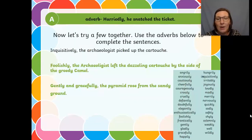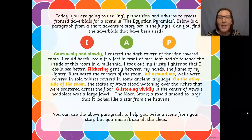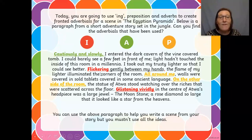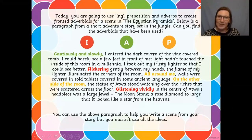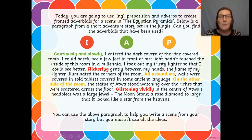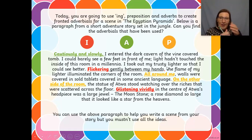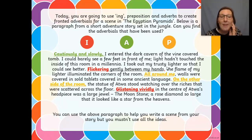The reason why we've put a comma here is because if we put it after 'flickering gently between my hands, the flame' — it wouldn't sound right, it's not grammatically correct. So what we've done is put 'flickering gently between my hands' because that is what you're doing — it's flickering gently between your hands. The flame of my lighter illuminated the corners of the room.